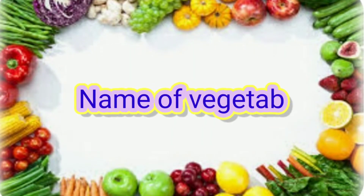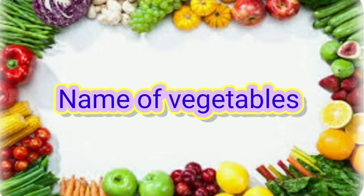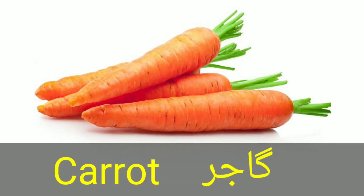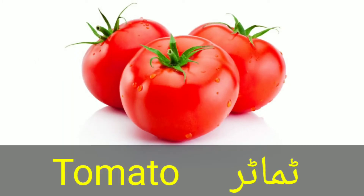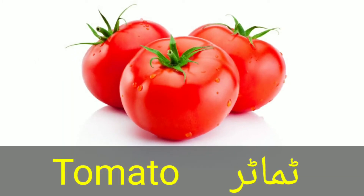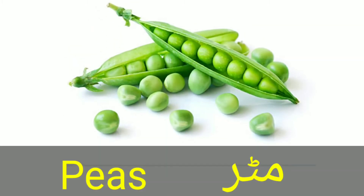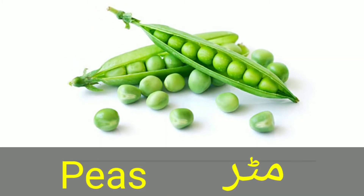Names of vegetables in English and Urdu. Carrot — gajar. Tomato — tamatar. Peas — matar.